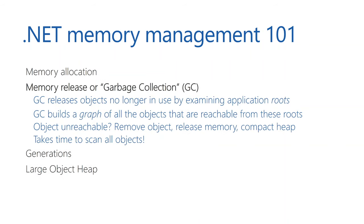The garbage collector releases objects that are no longer in use. It looks at the application roots, builds a graph of all reachable objects, and if an object is not reachable, it removes it or puts it in the finalizer queue, releases the memory, and compacts the heap so it doesn't get fragmented. Then you're good to reallocate that portion of memory.